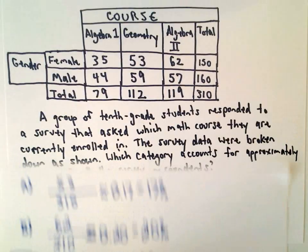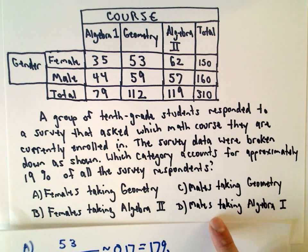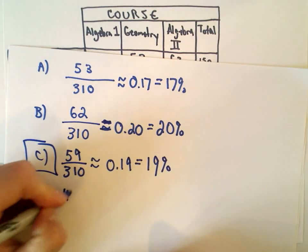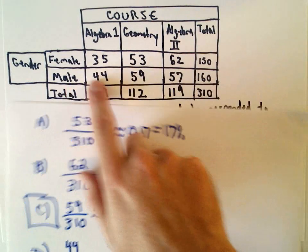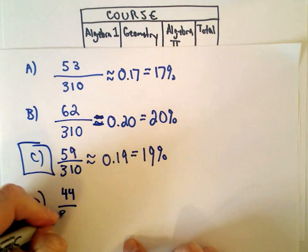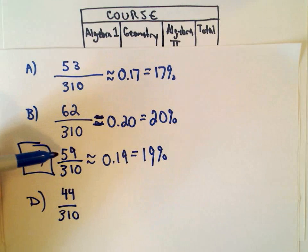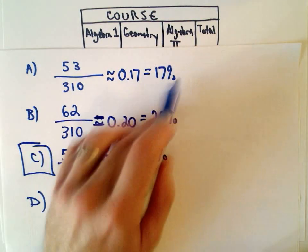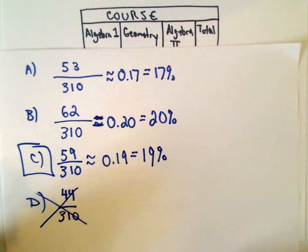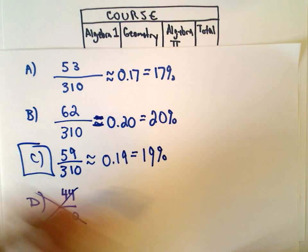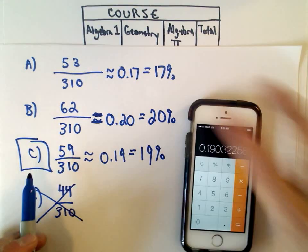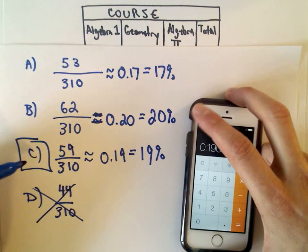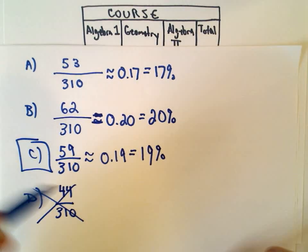Let's check the last one. Males taking algebra 1 — there are only 44 males taking algebra 1. I'm not even going to bother checking that because it's less than 53 people, so it's definitely going to give something lower than 17%. That's not the correct answer. Answer choice C gives something really close to 19%, so that's got to be it, and we move to the next question.